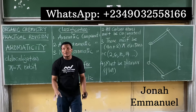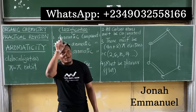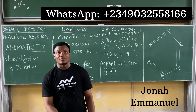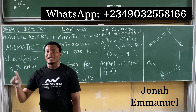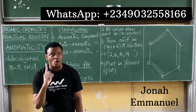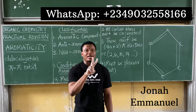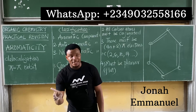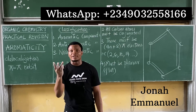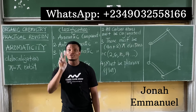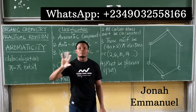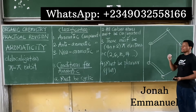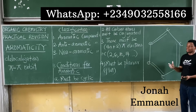We discussed sigma and pi bonds earlier. A single bond has one sigma bond. A double bond has one sigma and one pi. A triple bond has one sigma and two pi. Let's focus on the double bond — every double bond has one sigma and one pi. We're not looking at sigma bonds here; let's focus on pi.